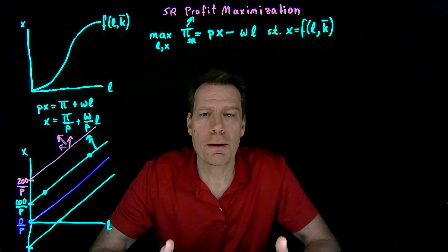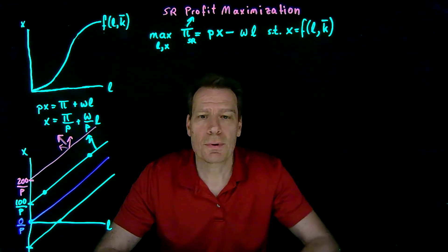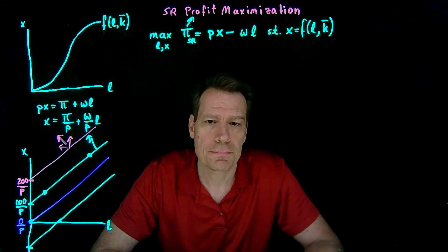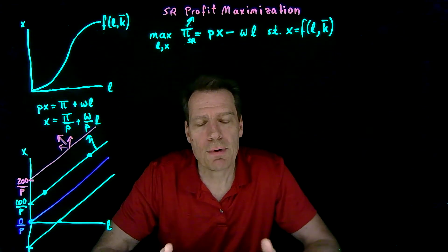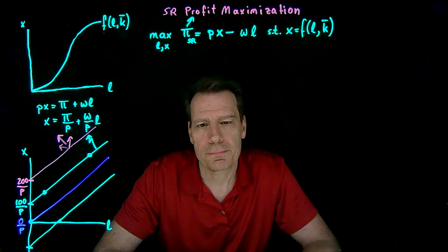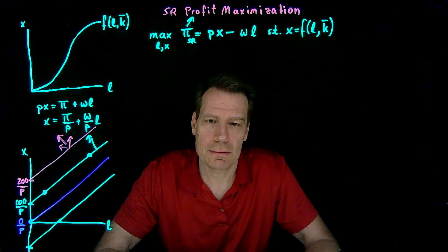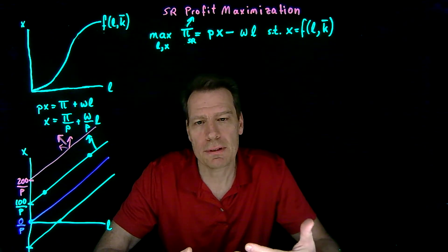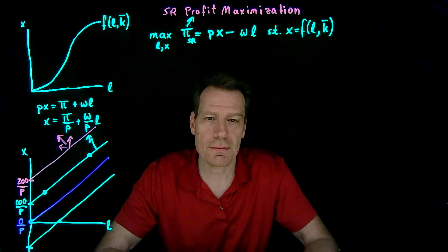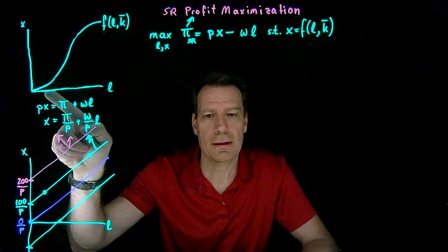We've now seen how we can represent graphically both parts of the firm's short-run profit maximization problem. The constraint is what the firm can produce given its current technology, represented by the short-run production function that holds capital fixed at its current level. Profit, the thing we're trying to maximize, can be represented by a whole map of profit lines, where profit increases as we move to the northwest in this graph. Just like with consumers, we have a whole map of lines that the firm is indifferent between. With consumers, we had an indifference map; the consumer tried to get to the highest possible indifference curve given the budget constraint. What the firm is trying to do is get to the highest profit line given the technological constraint of its short-run production function.